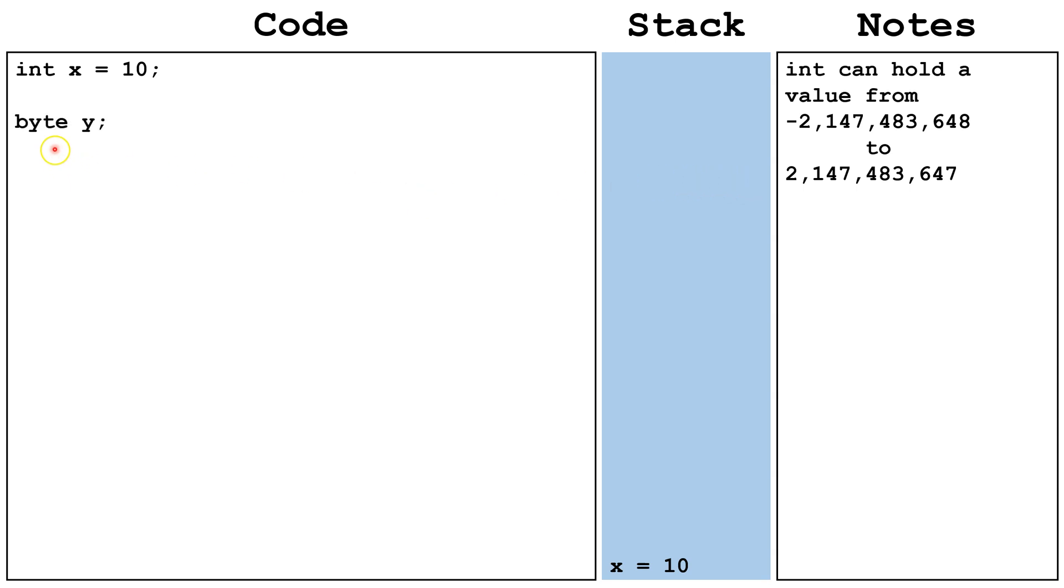Here, we're declaring a variable of the primitive type byte y. We haven't initialized it yet. Bytes can have a minimum value of negative 128 and a maximum value of 127.